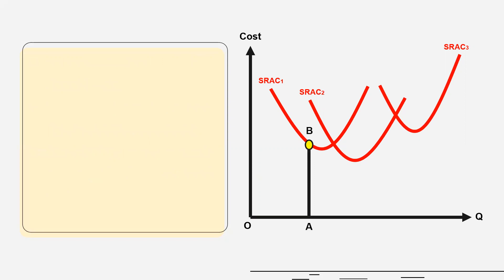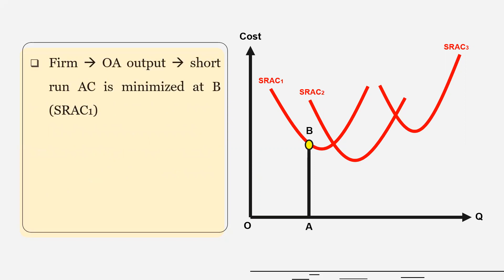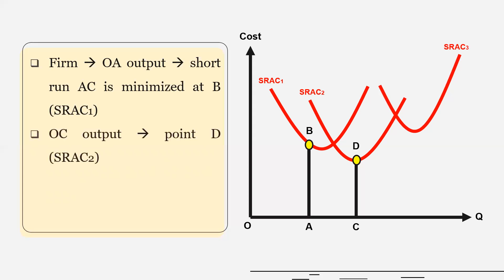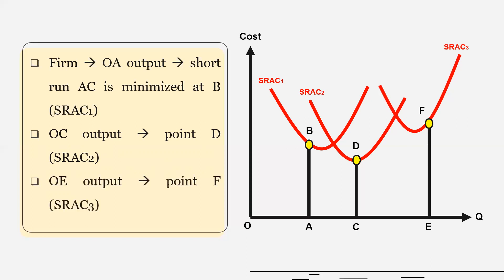Now let's assume the firm wants to produce output OA. The short-run average cost is minimized at point B, which is on SRAC one. If the firm wants to produce output OC, it has to increase the fixed cost, and therefore the short-run average cost is minimized at point D, which is on SRAC two. And if the firm wants to produce OE, it needs to increase the fixed cost again, and therefore the short-run average cost is minimized at point F, which is on SRAC three.